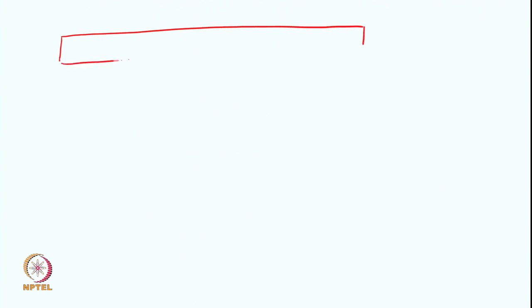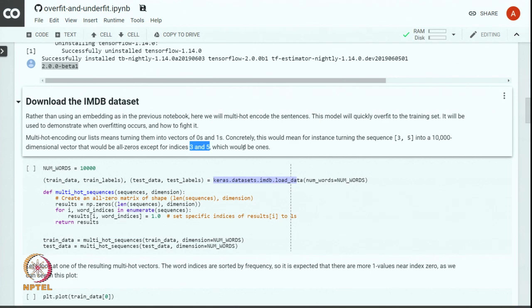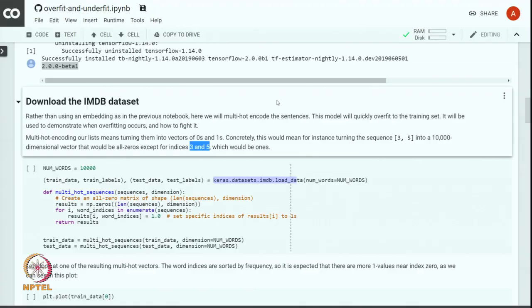Every review is converted into a multi-hot encoding — a vector with 10,000 positions. We convert each movie review into a sequence of word indices. If there are two words with indices 3 and 5 present in a review, only the positions corresponding to those words will have 1; the rest will have 0. That is how we convert the review into multi-hot encoding.